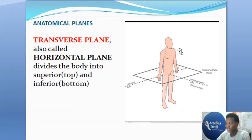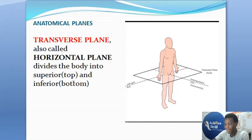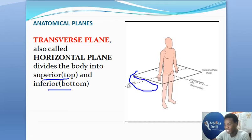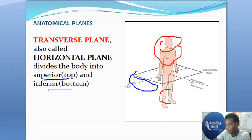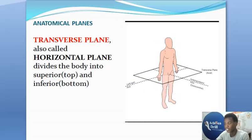The transverse plane, otherwise called the horizontal plane, passes through any part of the body and divides it into a superior part and an inferior part — a top and a bottom. Take a look at this section right here — that is the transverse plane, dividing the body into an upper or superior part and an inferior part.